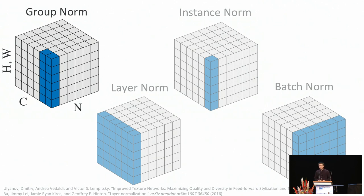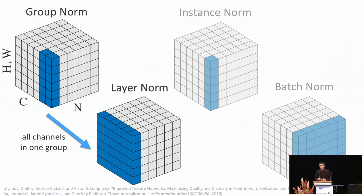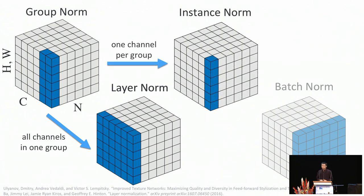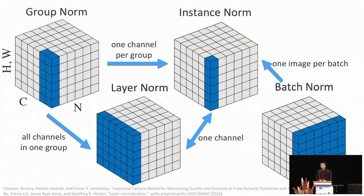Group norm is closely related to many existing normalization methods. Layer norm normalizes over the channel dimension as well as the spatial dimensions — group norm becomes layer norm when you put all channels into one group. Instance norm normalizes over the spatial dimensions only, and can be considered as a special case of group norm when each group has only one channel. Instance norm and layer norm are the same when there is only one channel. Finally, batch norm becomes instance norm when there is only one image per batch. A key difference is that group norm, layer norm, and instance norm are all batch-independent — they do not normalize on the batch dimension.